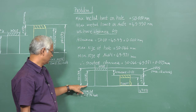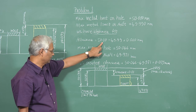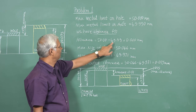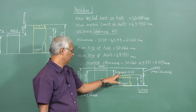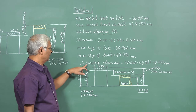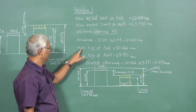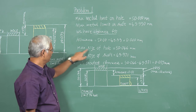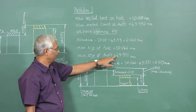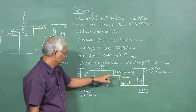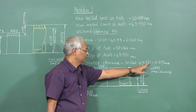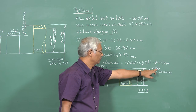The maximum metal limit for the hole is 50mm and the maximum metal limit for the shaft is 49.99mm. The algebraic difference gives the allowance: 0.01mm. The greatest amount of clearance is the difference between the maximum size of the hole (50.046mm) and the minimum size of the shaft (49.971mm), giving 0.075mm.